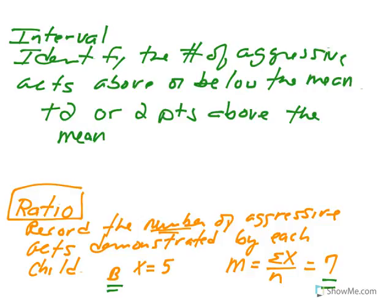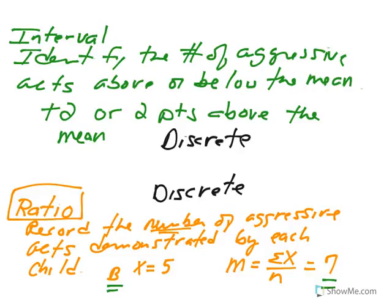For interval and ratio, we again identify whether the variable is discrete or continuous. Interval and ratio are quantitative, so either is possible. To distinguish between the two, we ask: can these values be expressed as a proportion, decimal, or fraction? When we express the distance from the mean in points above or below, that's a whole number. Aggression couldn't be expressed as a fraction — we couldn't say a child engaged in 2.25 acts of aggression or negative 1.5 acts below the mean. So because it's a whole number, this is considered discrete. Similarly with ratio, even though it's quantitative, it's a whole number and cannot be expressed as a fraction or decimal.